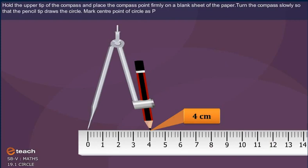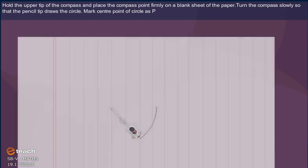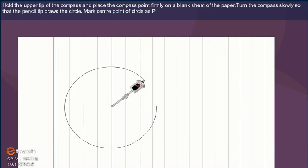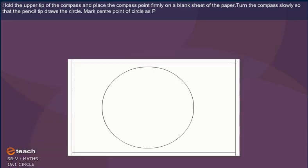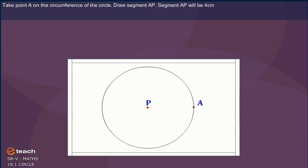Hold the upper tip of the compass and place the compass point firmly on the blank sheet of the paper. Now turn the compass slowly so that the pencil tip draws the circle. Make center point of circle as P. Take point A on the circumference of the circle. Now draw segment A, B. Segment A, B will be 4 cm.